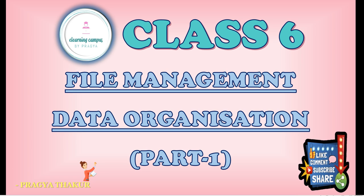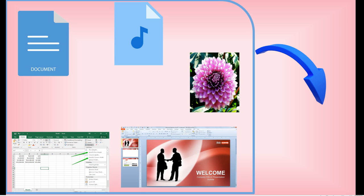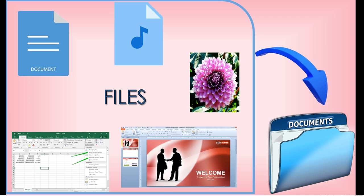We have learned that whatever we do on a computer, we basically work on data. Whatever we save in the computer — like documents, songs, images, presentations, or Excel sheets — all are called files. All the files that belong to the same category can be grouped or saved in a folder. So the data in a computer can be arranged in the form of files or folders.